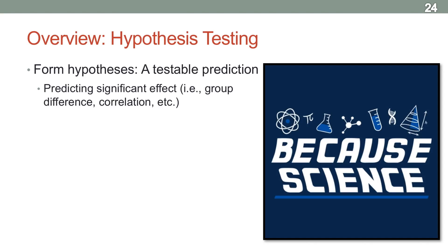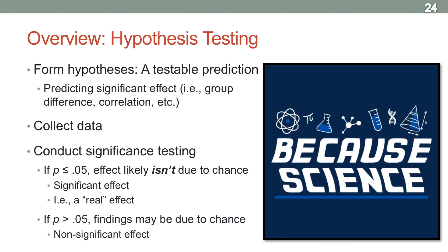As an overview of hypothesis testing: the first step is to form a hypothesis — a testable, falsifiable prediction. You have a theoretical view of the world, create an experiment to test that theory, and it'll either be proven true or false. Then you go out and collect the data, run the experiment, and conduct significance testing. Significance testing will always yield a p-value.